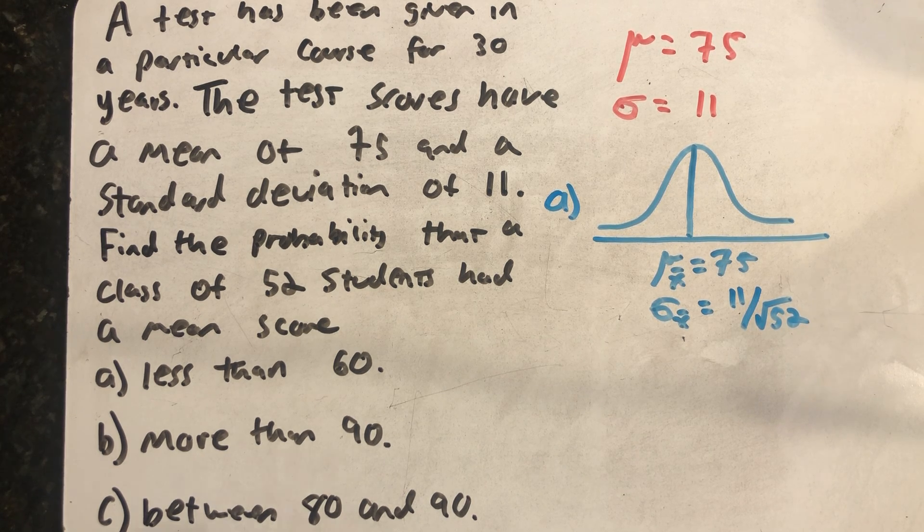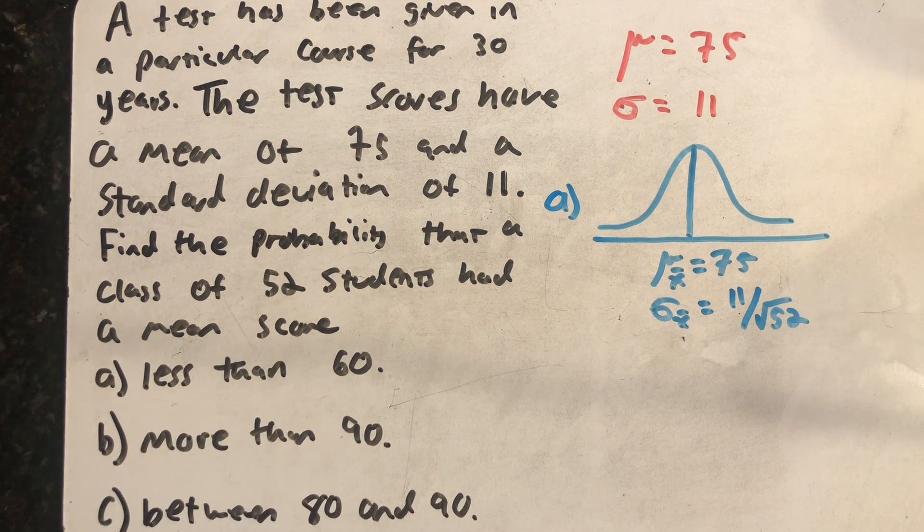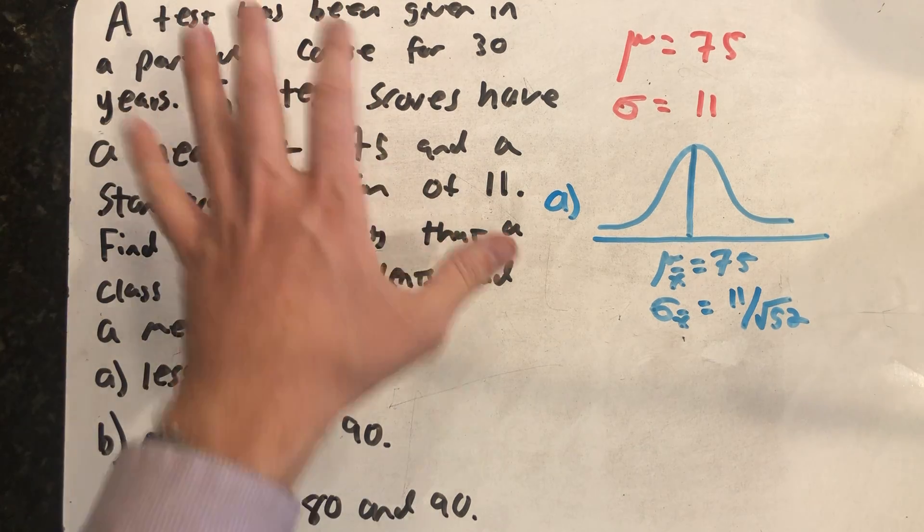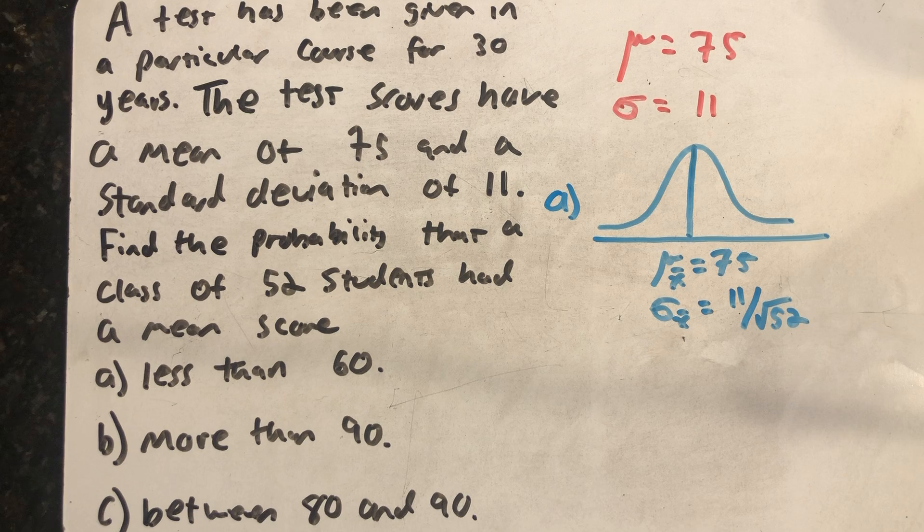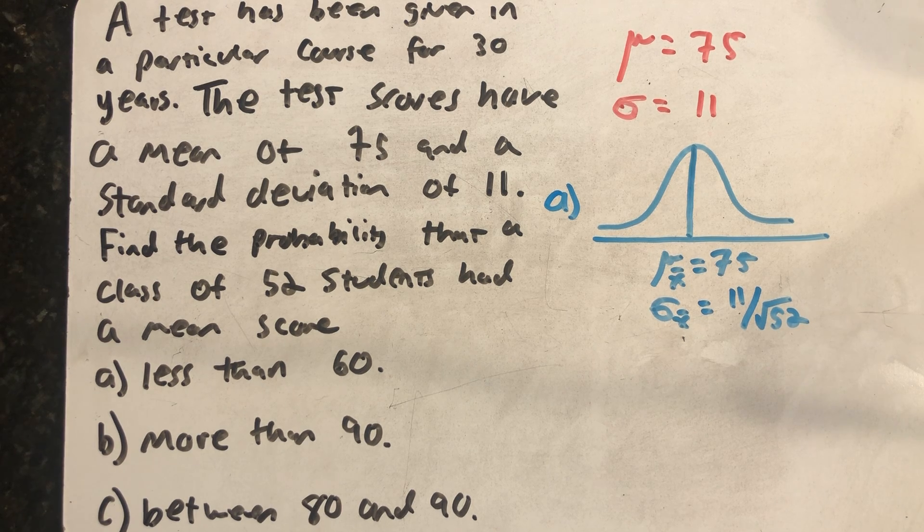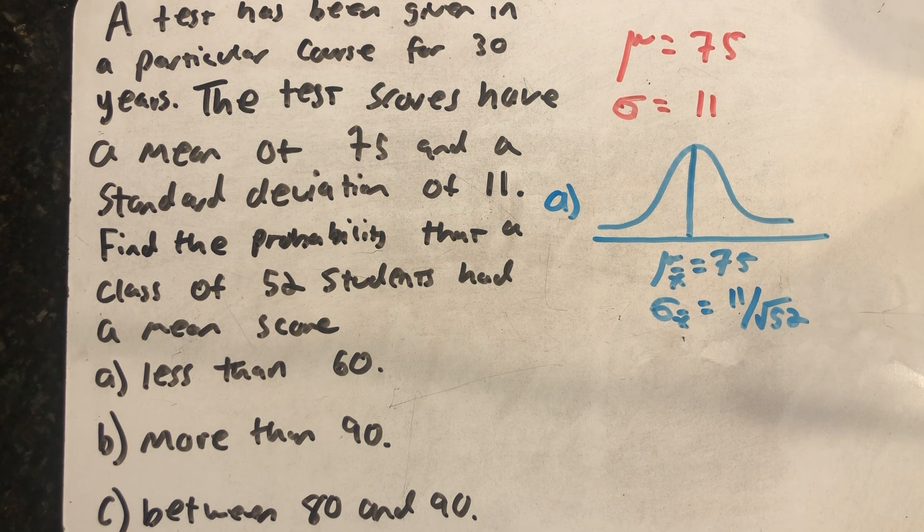And good news, we are. When the sample size is larger than 30, the central limit theorem applies. So even though I don't know anything about the original population's distribution, whether it's bell-shaped, uniform, or just some other distribution, I am allowed to use the central limit theorem because my sample size is over 30.